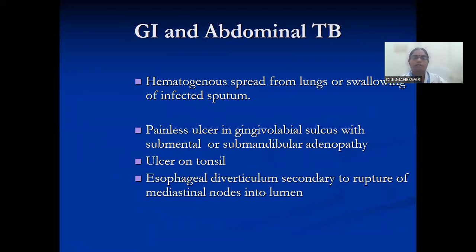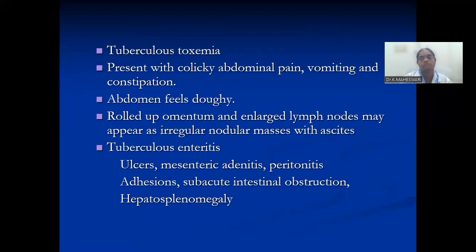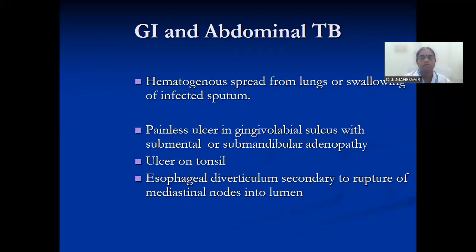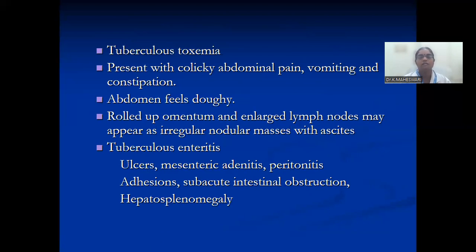Abdominal tuberculosis is related to hematogenous spread from the lungs or swallowing of infected sputum. Painless ulcers can be present, ulcers on the tonsils, and esophageal diverticulum secondary to rupture of mediastinal nodes into the lumen. Patients can also present with colicky abdominal pain, vomiting, constipation, doughy abdomen, rolled-up omentum, and tuberculous enteritis.